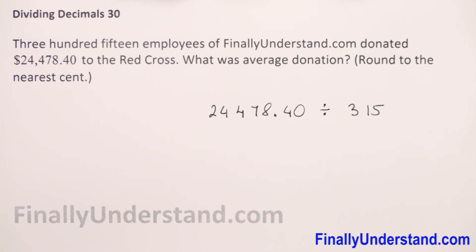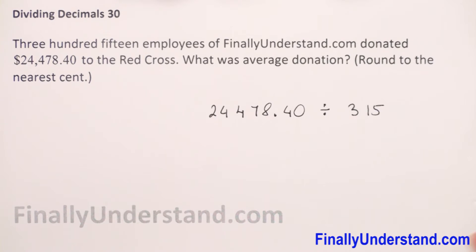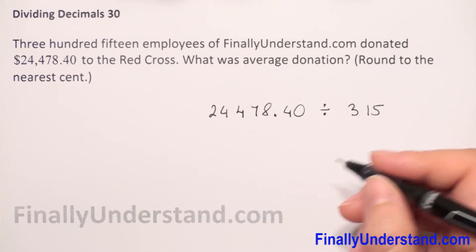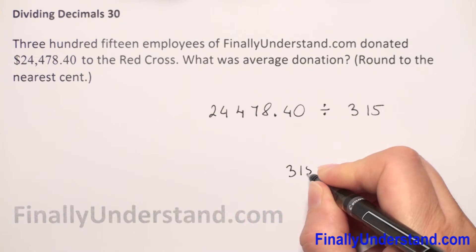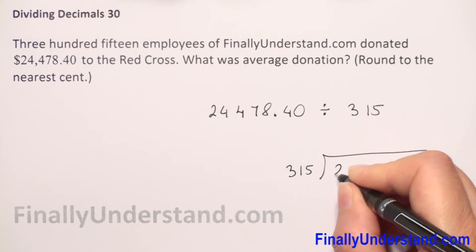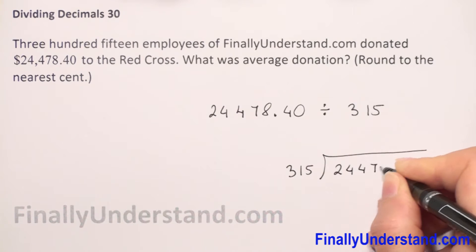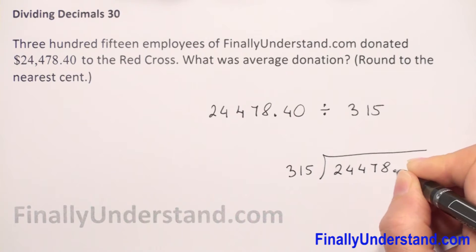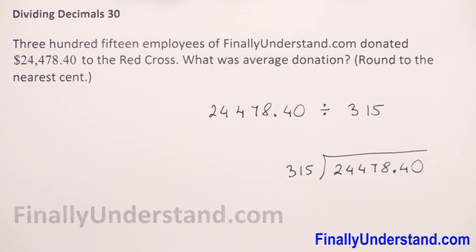We have to do long division. Our divisor is a whole number, so we can set up long division. We have 315 dividing into 24,478.40.